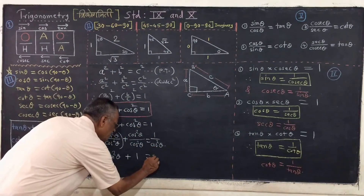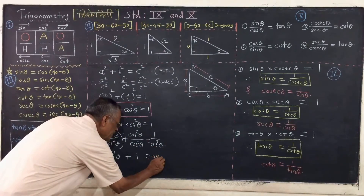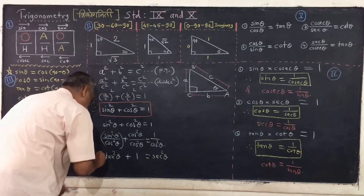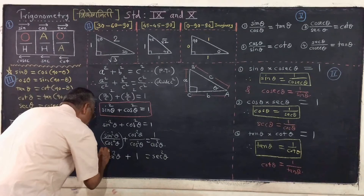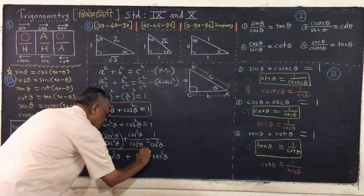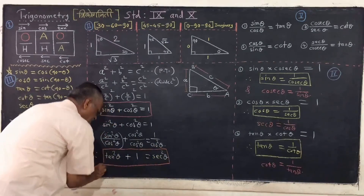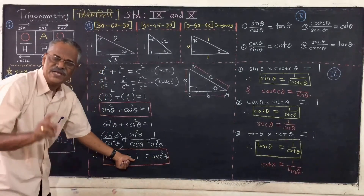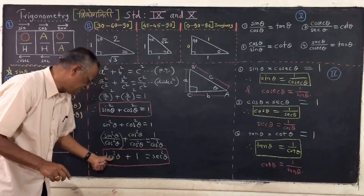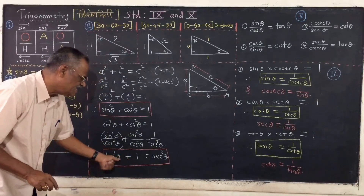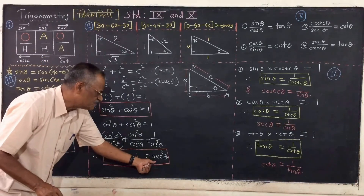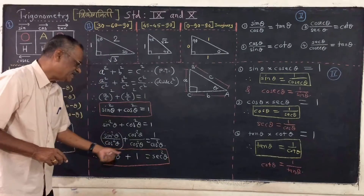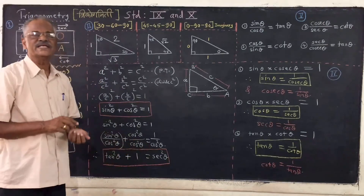So you can substitute here and you are getting another identity: 1 plus tan squared theta is equal to sec squared theta.